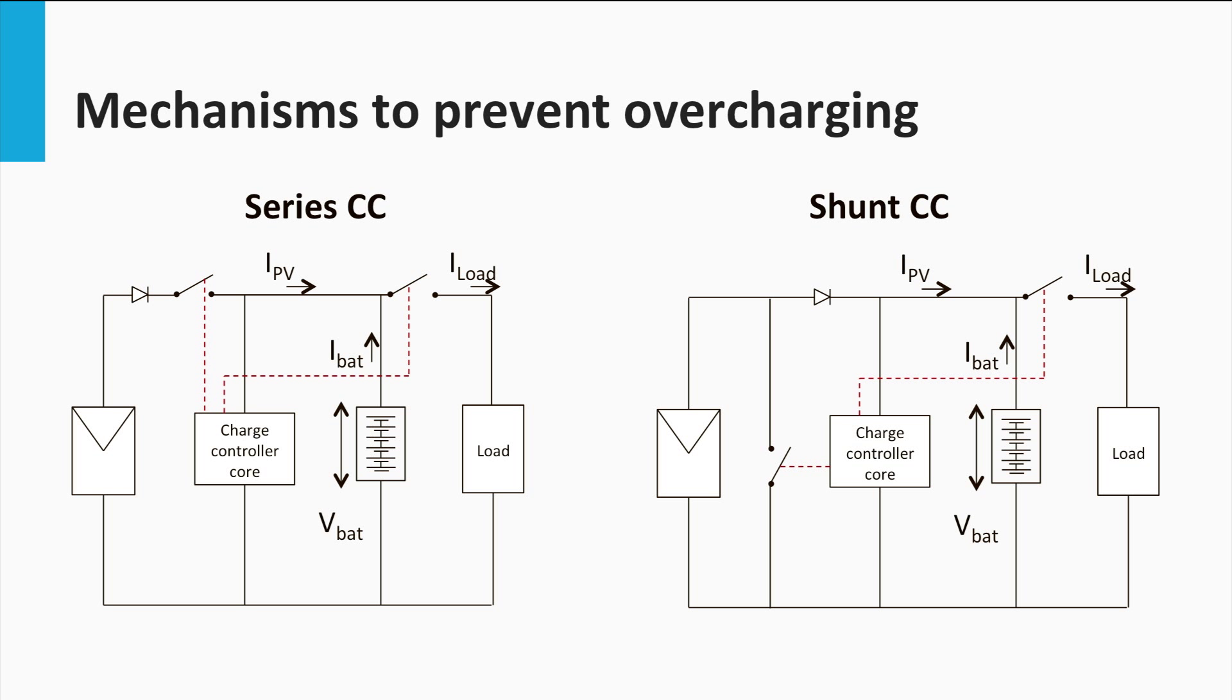On the other hand, in a parallel or shunt controller, the overcharging is prevented by shorting the PV array. This means that the PV modules work on the short circuit mode and that no current flows into the battery.